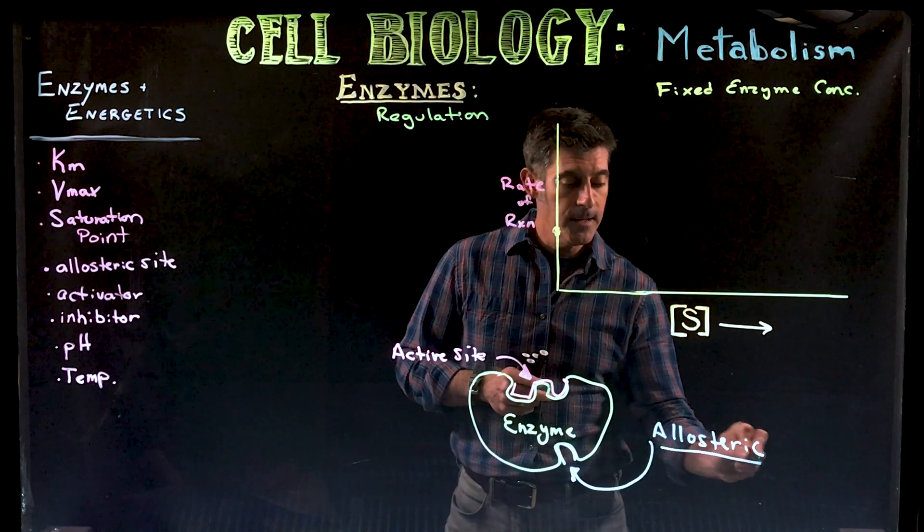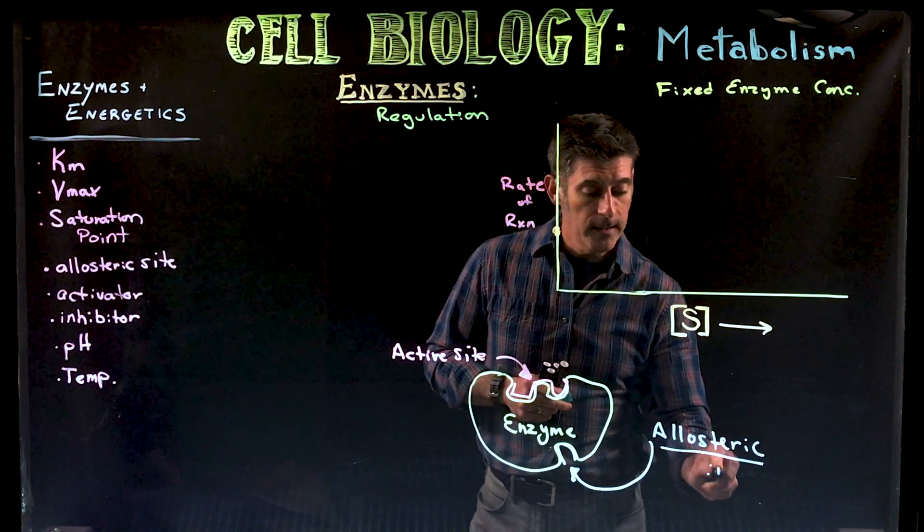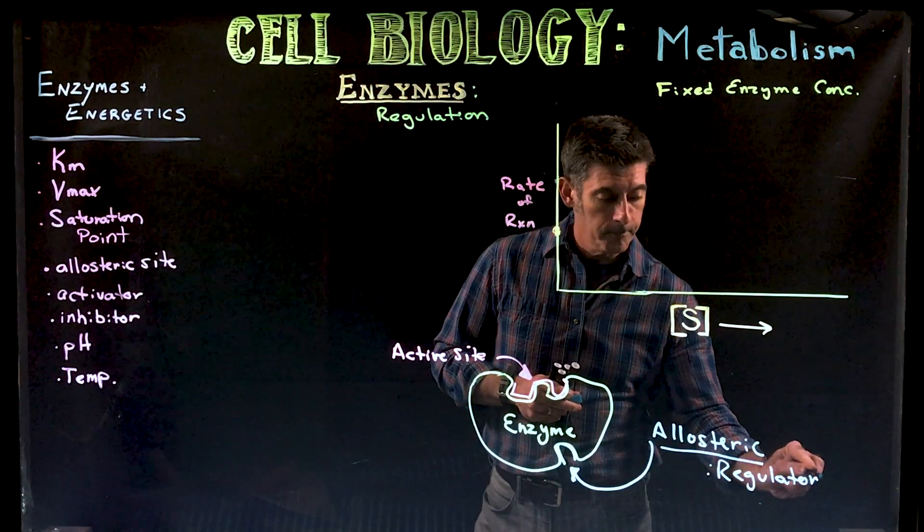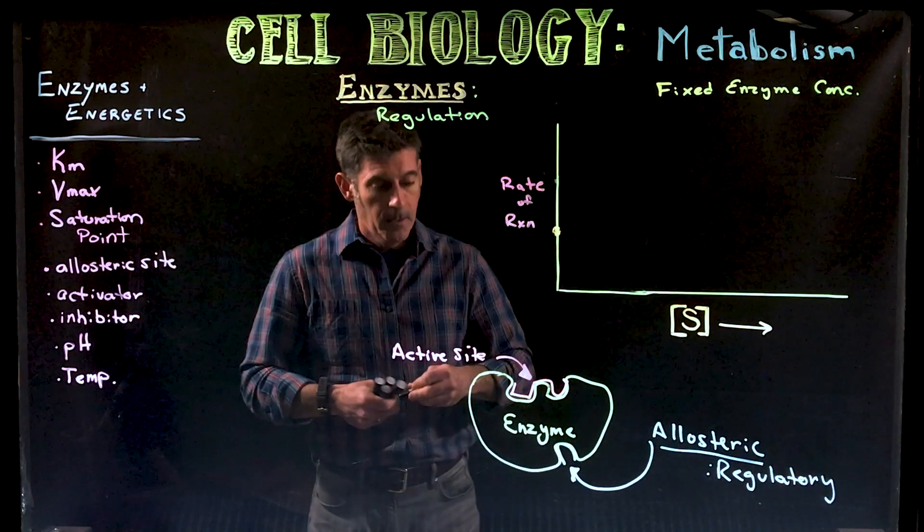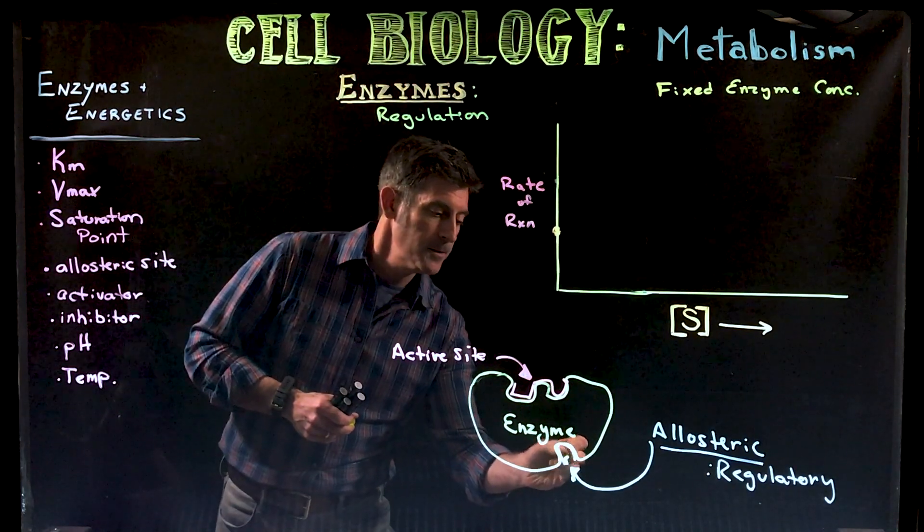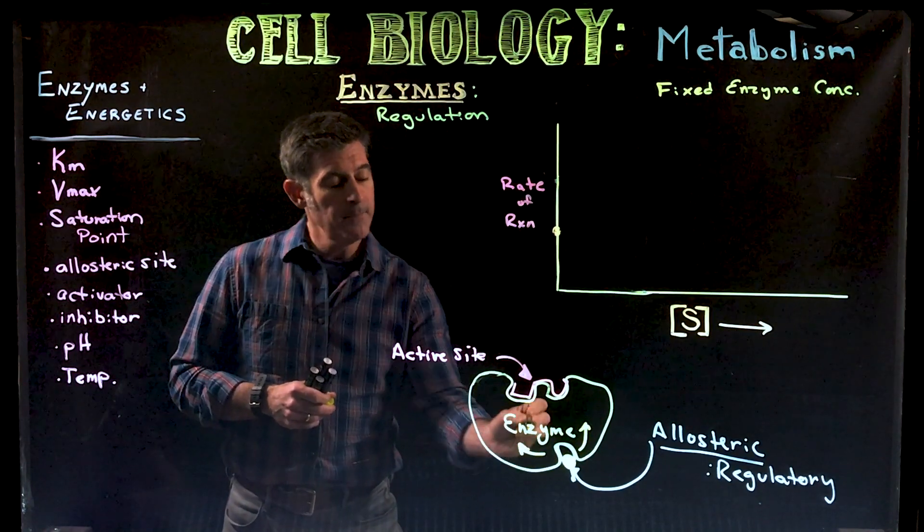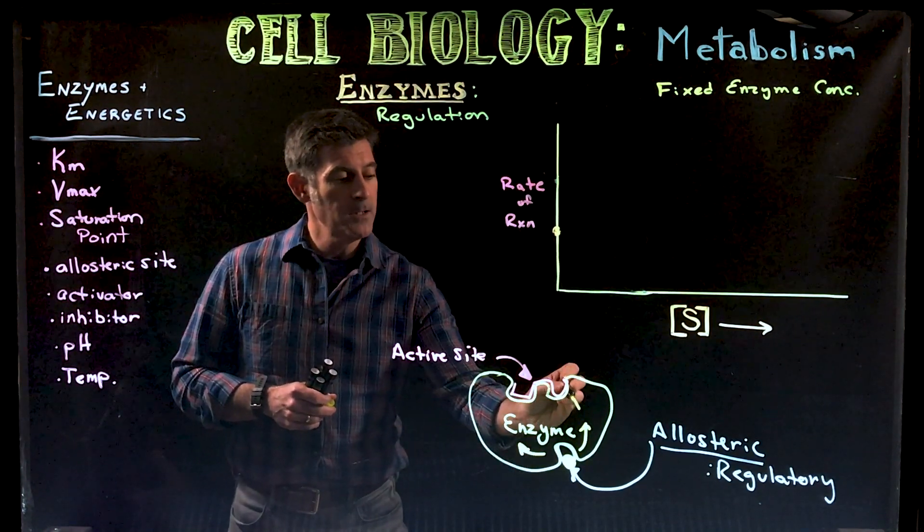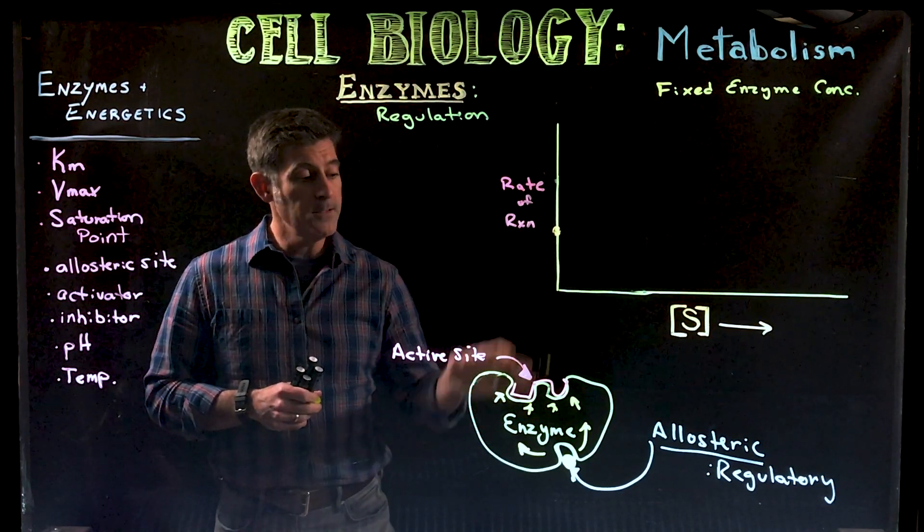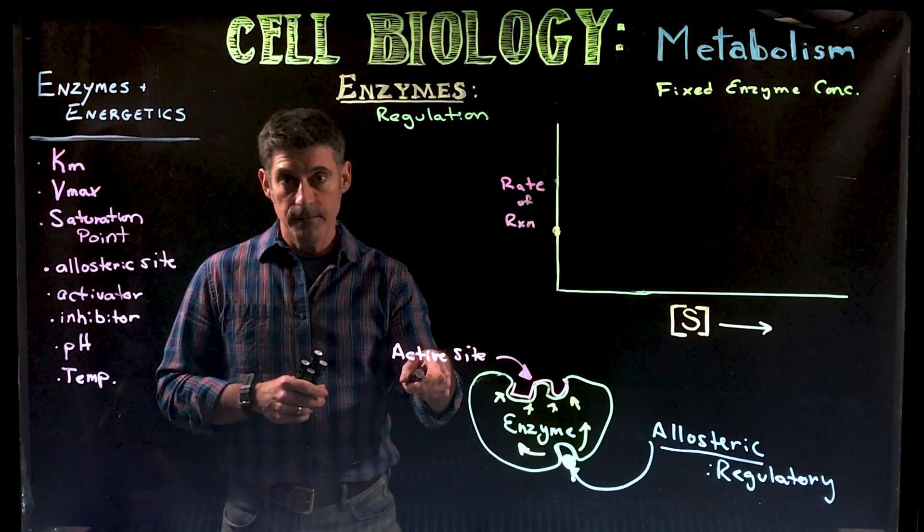Now in an allosteric site there's no chemical reactions taking place. Allosteric sites are purely regulatory sites. What that means is that something that attaches to the allosteric site is then going to cause a change in shape of the enzyme and that change is going to directly affect the shape and other qualities of the active site. So the allosteric site will affect the active site.